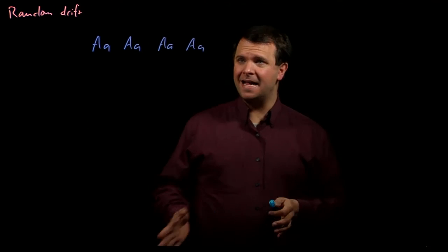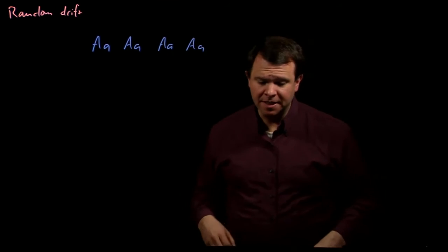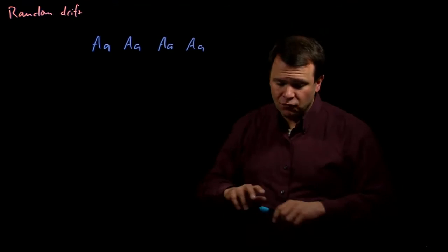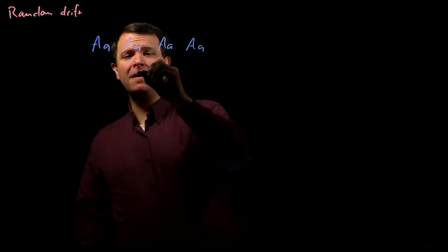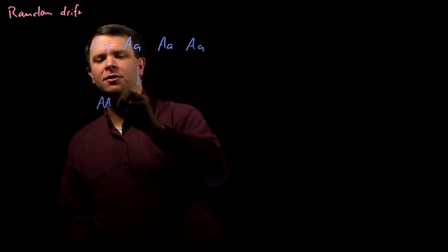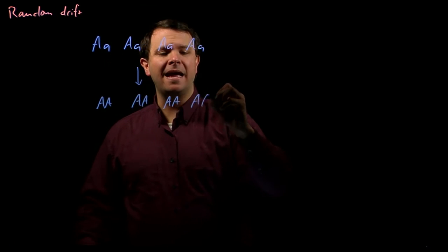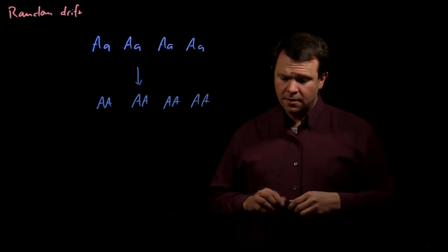So let's also say that these four individuals have four children among them due to random mating. Is it possible that all four of those children end up with big A, big A alleles? Of course it is.